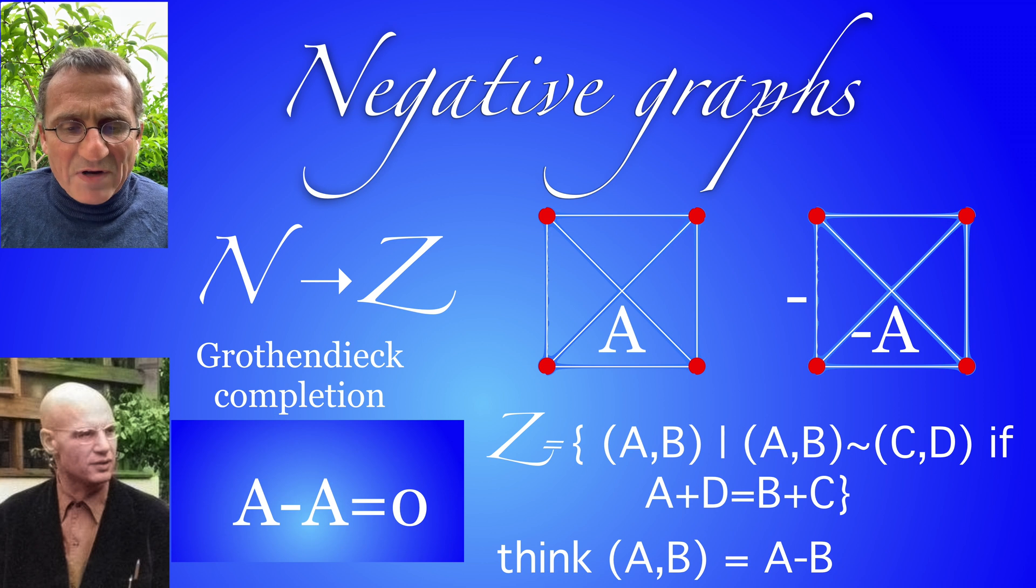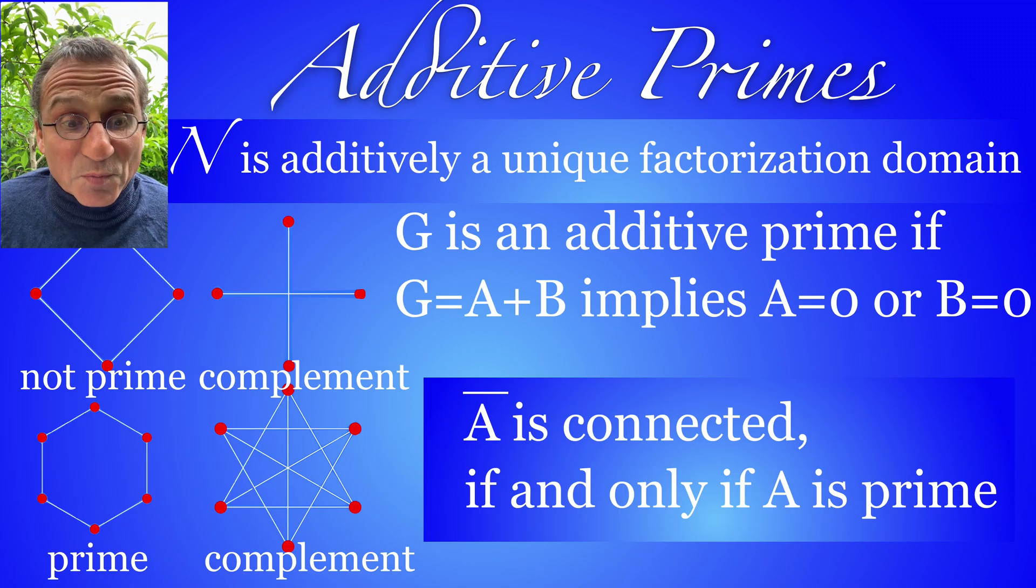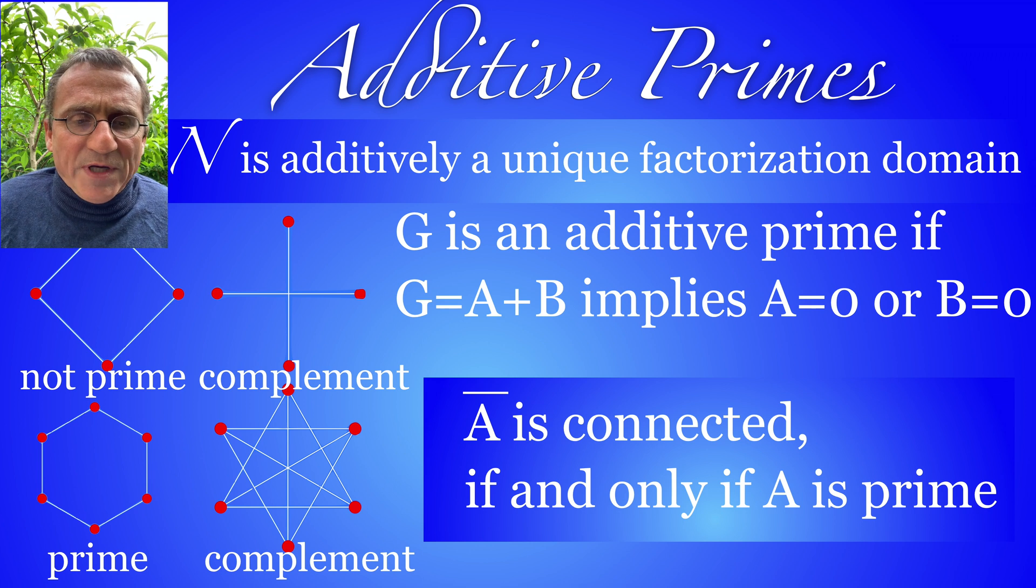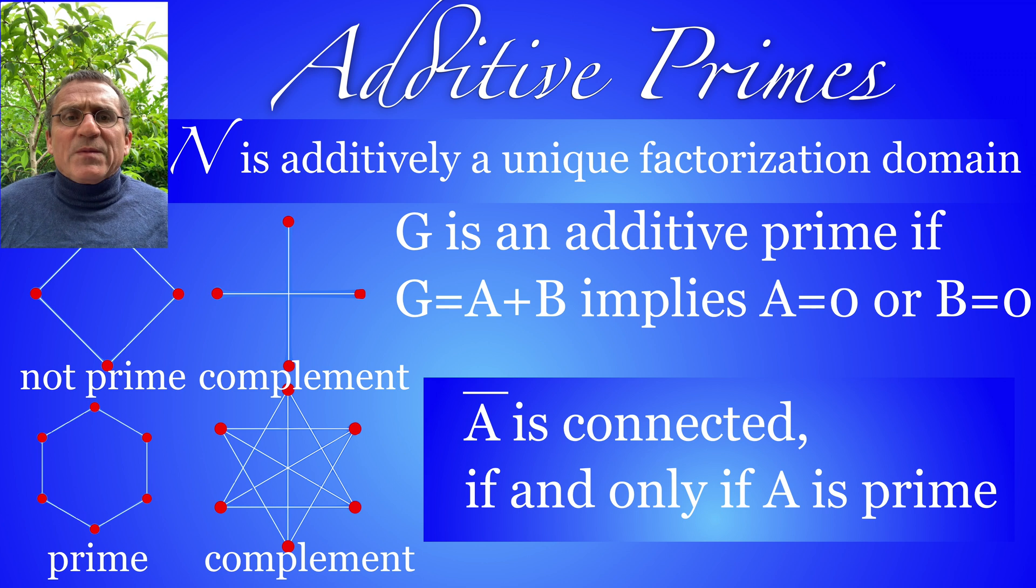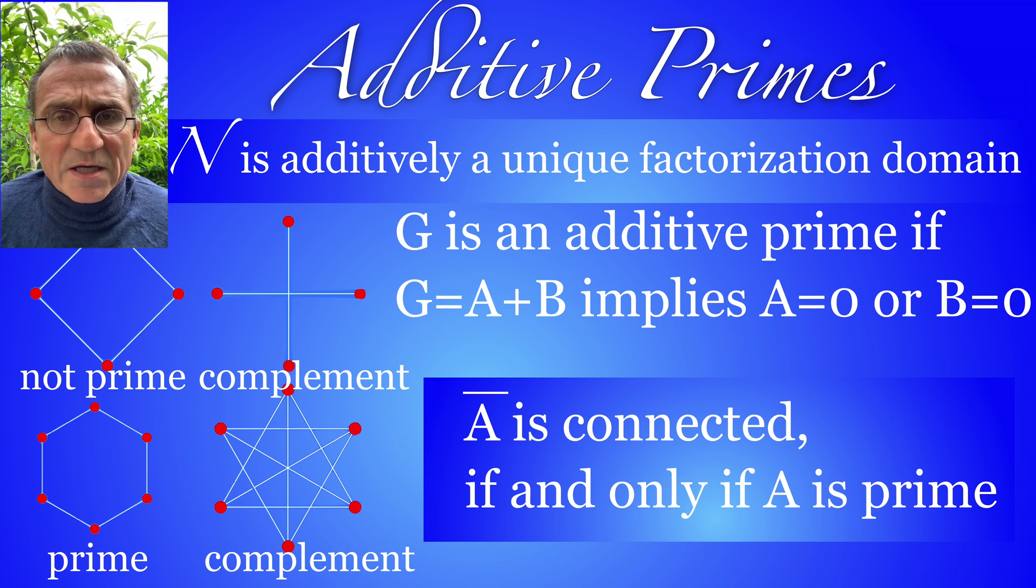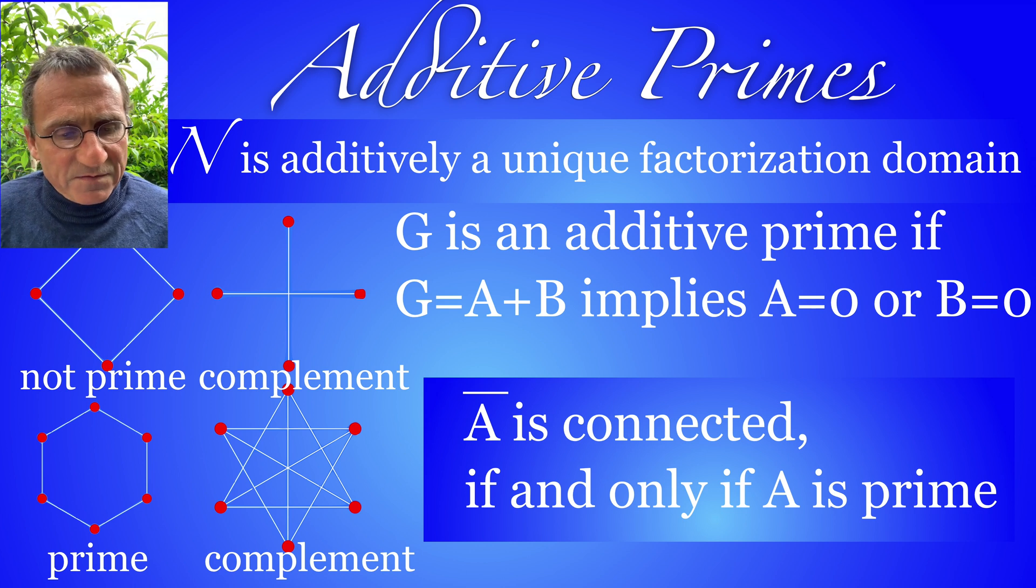So usually we write an element now as a minus b. We cannot simplify that in general because there are additive primes in this monoid. There are graphs which cannot be written as a sum of smaller graphs and which are not just one like in the case of the natural numbers. A graph is a prime if its graph complement is connected because this joint monoid construction is dual to the disjoint union when we take graph complements.